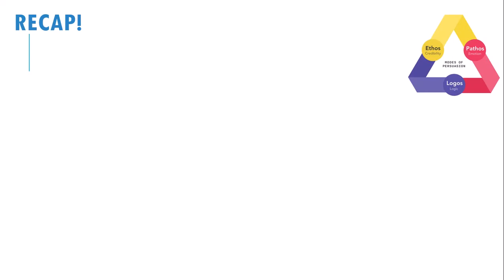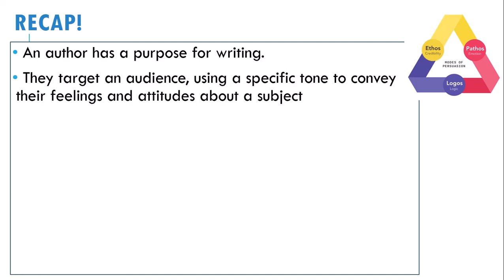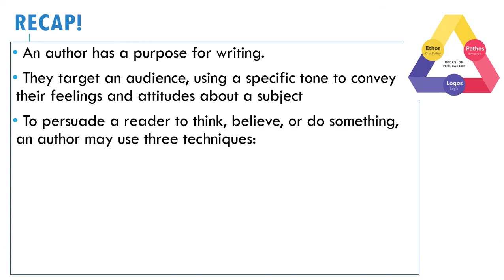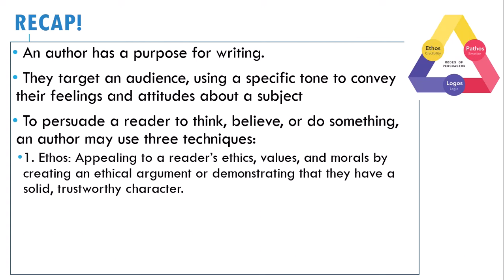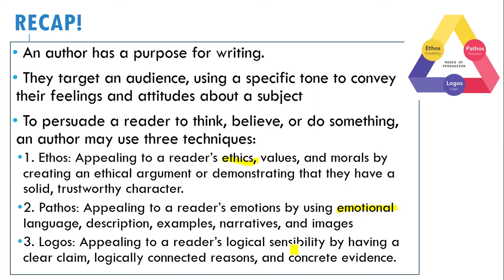Let's recap. The modes of persuasion — the three pillars of argument — are ethos, pathos, and logos. An author has a purpose for writing. They target an audience using a specific tone to convey their feelings and attitudes about a subject. To persuade a reader to think, do, or believe something, they use three techniques. Ethos: appealing to a reader's ethics, values, and morals by creating an ethical argument or demonstrating a solid, trustworthy character. Pathos: appealing to a reader's emotions through emotional language, examples, narratives, and even images. And logos: appealing to a reader's logical sensibility through a clear claim, logically connected reasons, and concrete evidence.